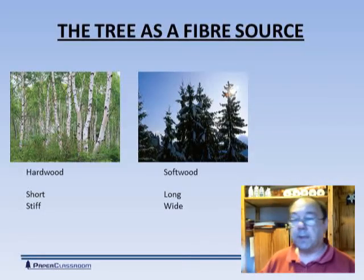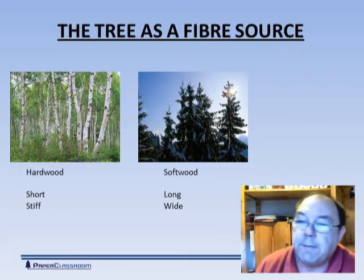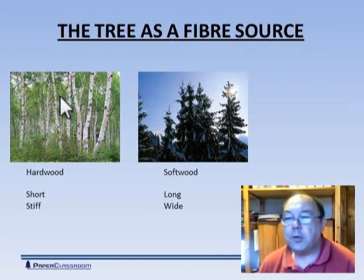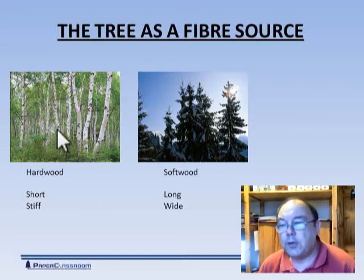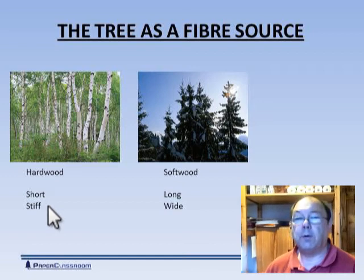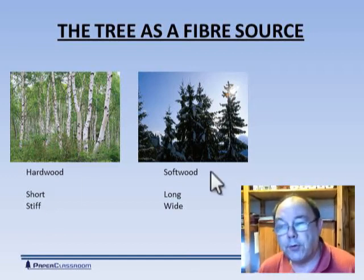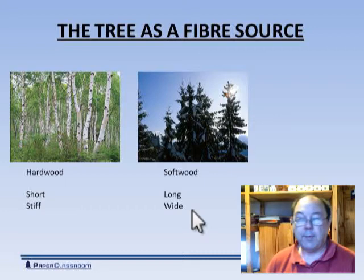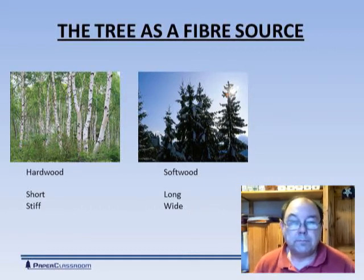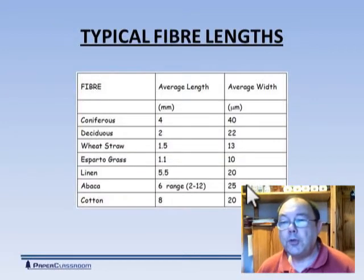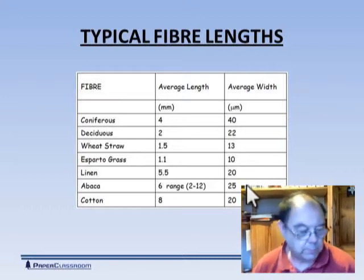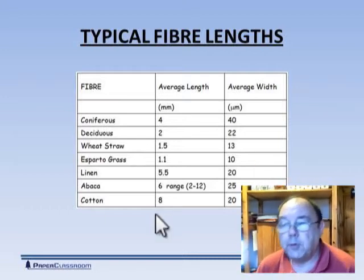So the plant produces these fibres, the fibres grow up into trees. Hardwood trees have short, stiff fibres — very good for appearance — and softwood trees have long, wide fibres — very good for strength. To give you some idea of the variety of shapes and sizes of fibres, here's a table. Coniferous plants — the evergreens or softwoods — are typically three to four millimetres in length and 40 microns wide.